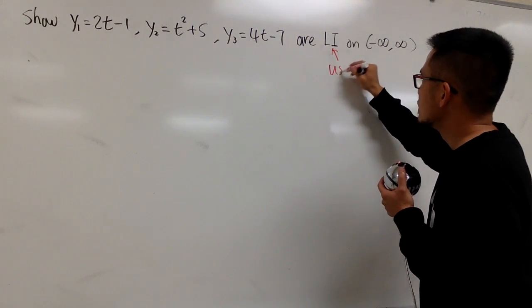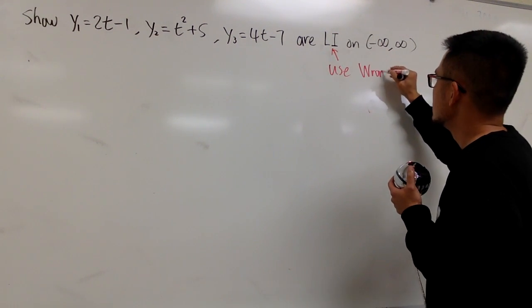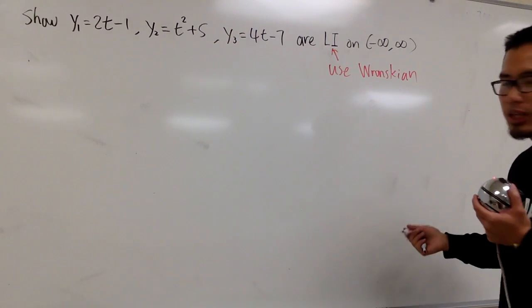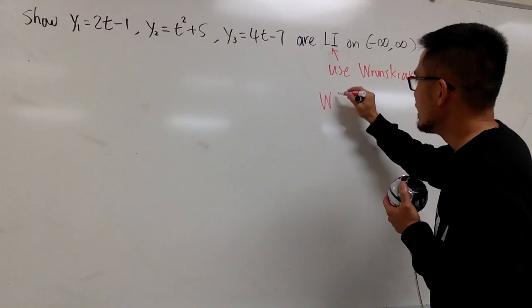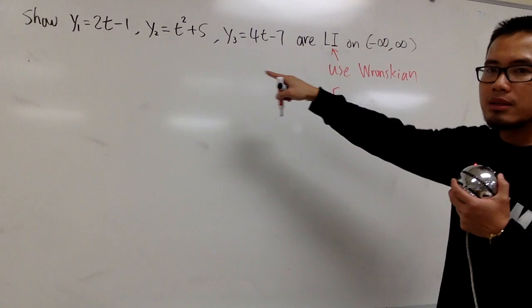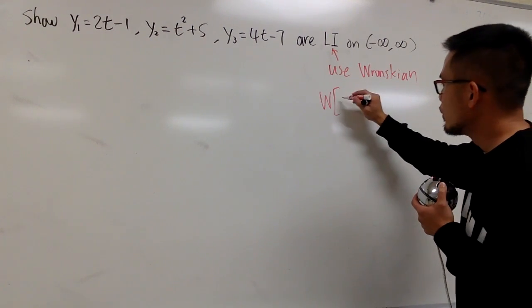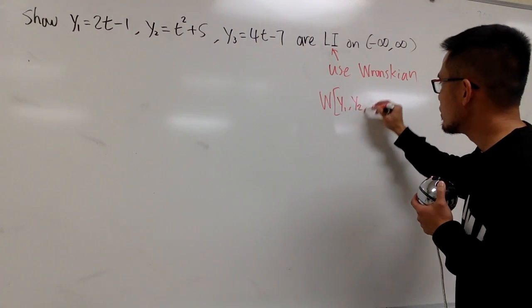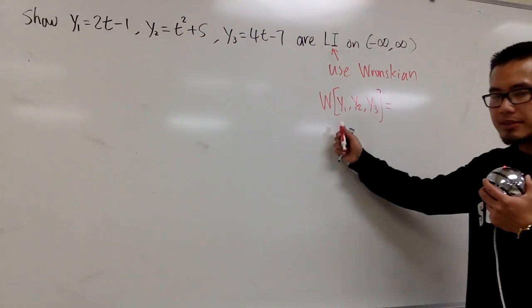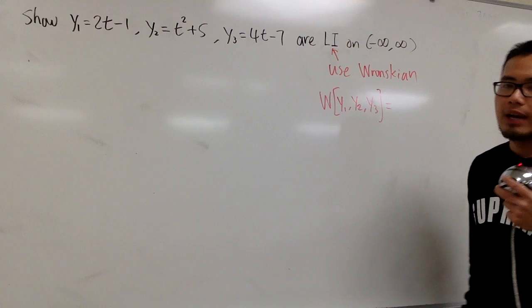We are going to use what we call the Wronskian. Here's the notation for that: W, and sometimes you can put a bracket with big parentheses. Let me put down the three functions version. We have y1, y2, y3. So this is the notation, it's called the Wronskian, and what you do is